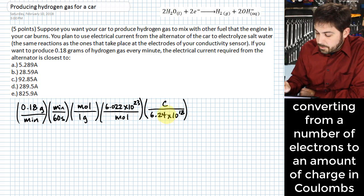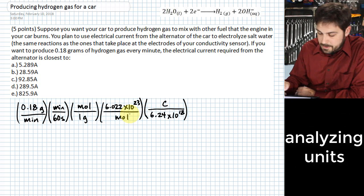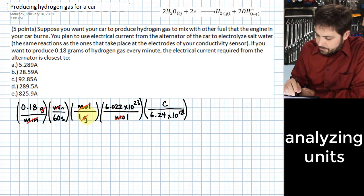And therefore, if we count up electrons and 6.24 times 10 to the 18th electrons is what gives us a coulomb, this is a multiplier we can use to go to coulombs. And if we actually start looking at the units here, what we find is that we can cancel minutes, we can cancel moles, we can cancel grams.